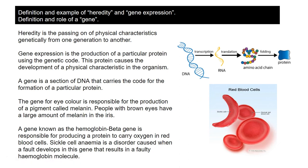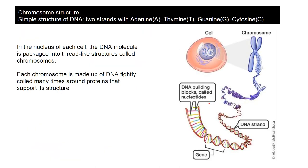Sickle cell anemia is an example of a gene mutation - it's a fault caused by a single gene. Remembering the structure of a chromosome: a chromosome is a thread-like structure found in the nucleus of a cell. It's also found in the mitochondria of cells and found in the chloroplast of plant cells.